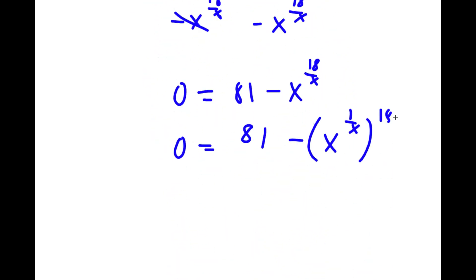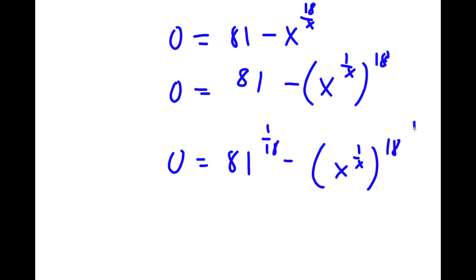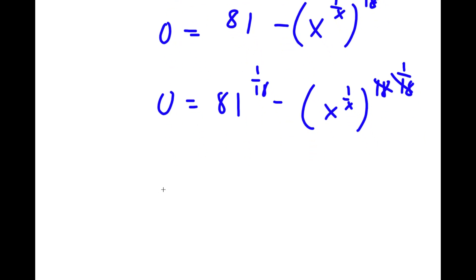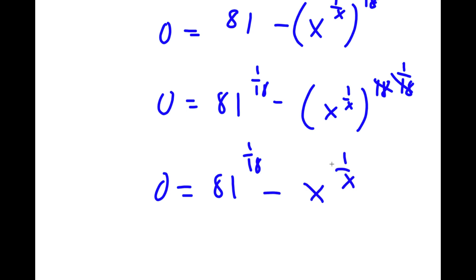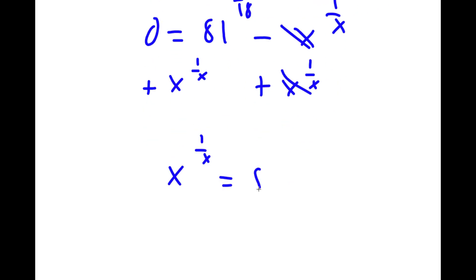So I simply wrote it in this form. Now if I take the power of 1 over 18 on both sides, I get 0 is equal to 81 to the power of 1 over 18 minus x to the power of 1 over x to the power of 18, all to the power of 1 over 18. These cancel out, giving 0 is equal to 81 to the power of 1 over 18 minus x to the power of 1 over x. So adding x to the power of 1 over x on both sides, these cancel out and I get x to the power of 1 over x is equal to 81 to the power of 1 over 18.